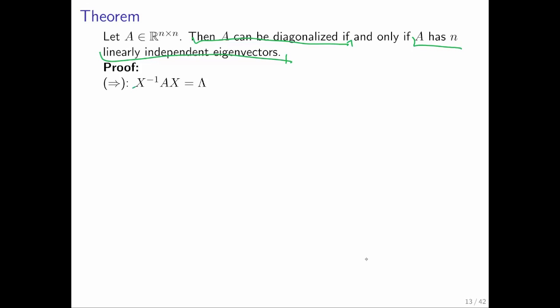So we know that matrices X and lambda exist that satisfy this right here. We can rewrite that as such because we can multiply both left and right of the equal sign by X from the left. That gives you this right here.